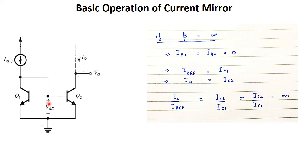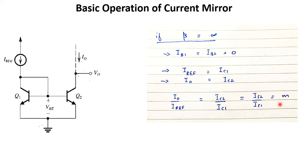If we consider β to be infinite, this means that base current is zero. So no current is flowing from those branches. So total current — I-reference will be equal to collector current IC1. This current will go directly to the collector of Q1. Similarly, I-out is equal to IC2, and I-out over I-reference is equal to IC2 over IC1, which equals IS2 over IS1, which equals M.